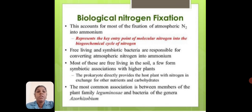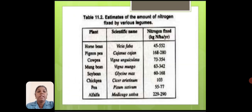Biological nitrogen fixation accounts for most of the fixation of atmospheric nitrogen into ammonia. Free-living and symbiotic bacteria are responsible for converting atmospheric nitrogen into ammonia. Most of these are free-living in the soil, while a few form symbiotic associations with higher plants.